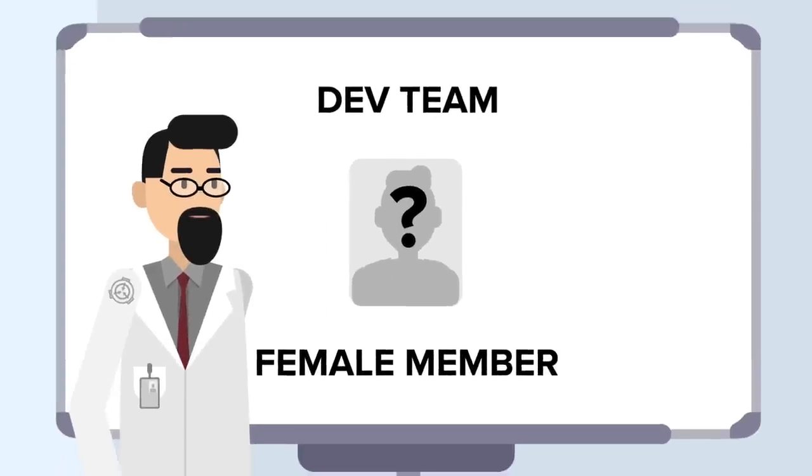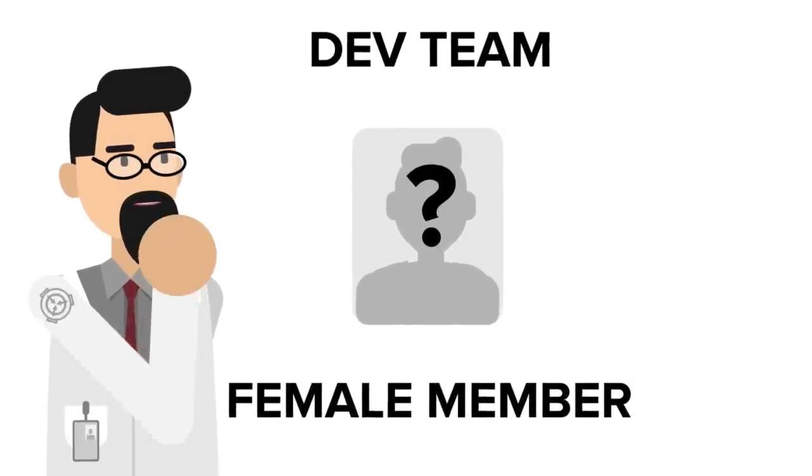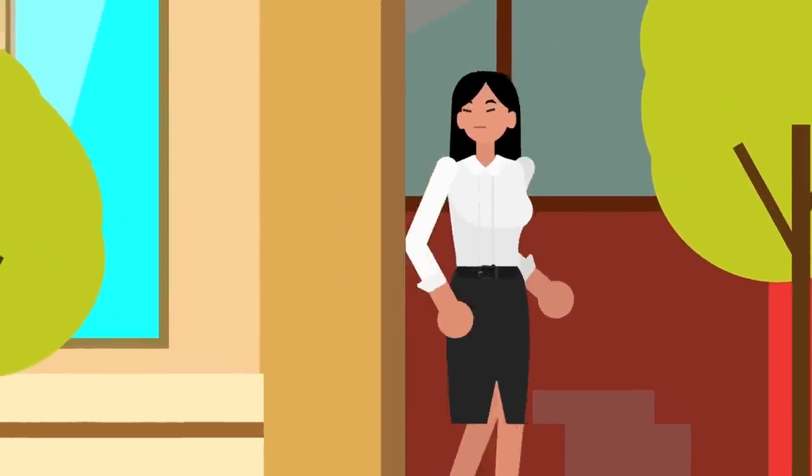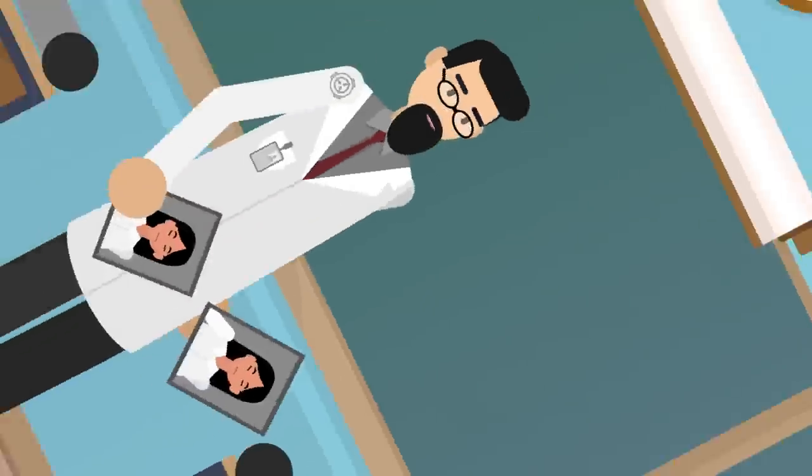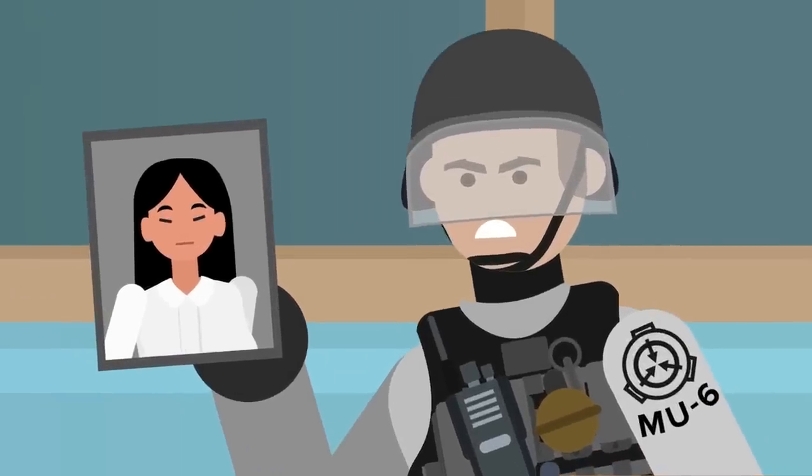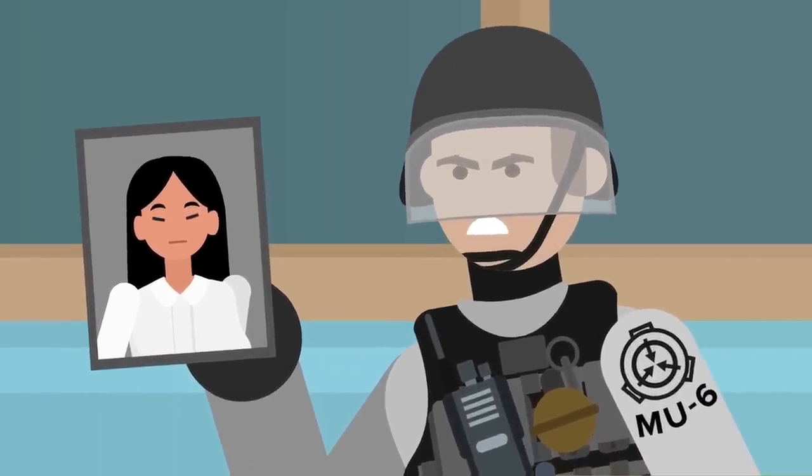It's believed that one classified female member of the dev team was behind the anomalous nature of the game, but she was able to escape, and has since attempted to join other development teams. She is now considered an active person of interest, and is being pursued by Mobile Task Force Mu-6, aka, don't hate the player.